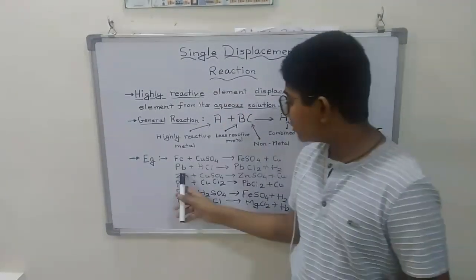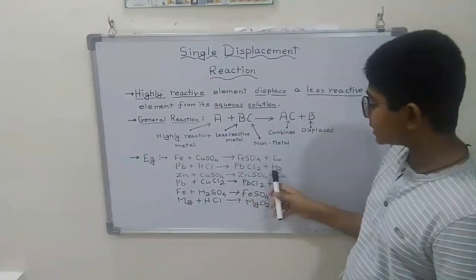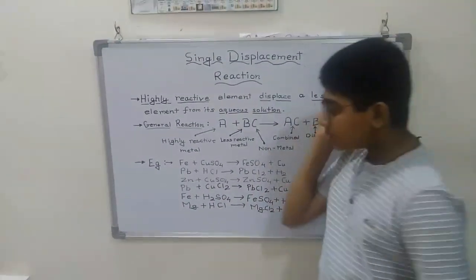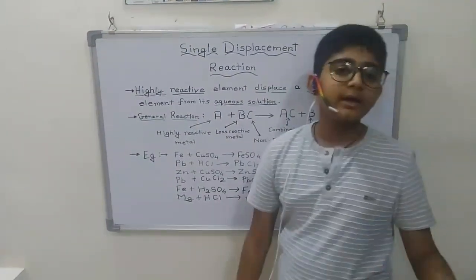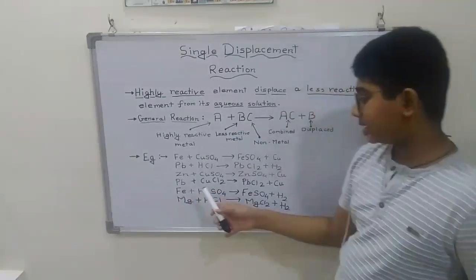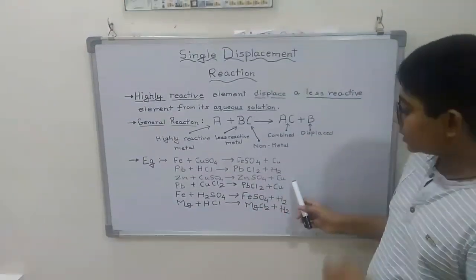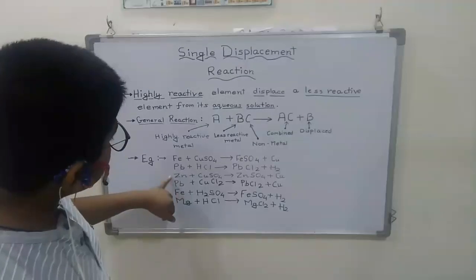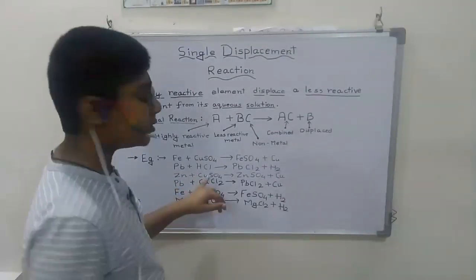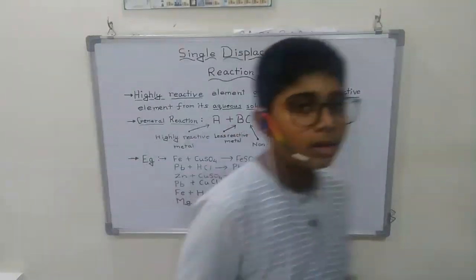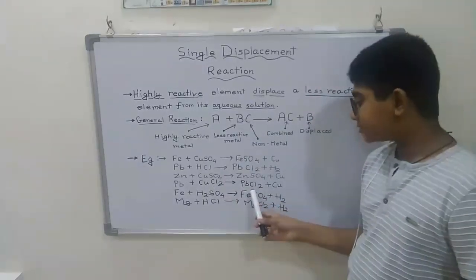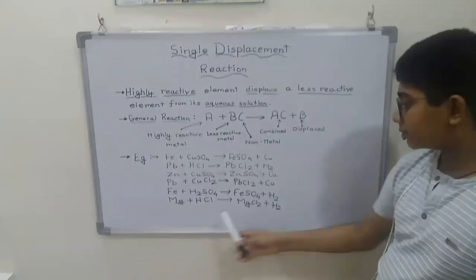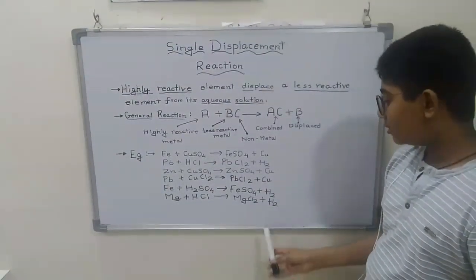Let's have some more examples. Hydrogen gas is liberated in gaseous state. Zinc plus copper sulfate gives zinc sulfate plus copper — the same type of reaction as Fe plus CuSO4, because zinc is also higher in reactivity series than copper and iron. After that, Pb plus CuCl2 gives PbCl2 plus Cu. Fe plus H2SO4 gives FeSO4 plus H2. And Mg plus HCl gives MgCl2 plus H2.